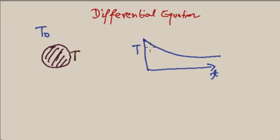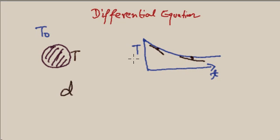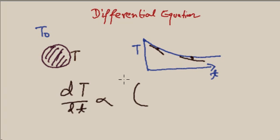After getting this curve, it was very difficult for Newton to find the exact governing function by which this curve could be defined. But he observed one thing: the slope of temperature is proportional to the temperature difference.